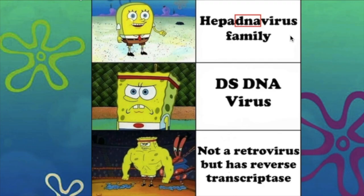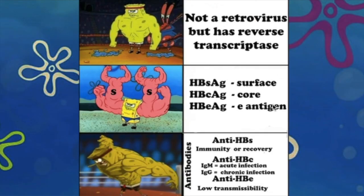Hepatitis B Virus is a member of the Hepadnavirus family. It is a partially double-stranded DNA virus — not a retrovirus, but has its own reverse transcriptase. Hepatitis B Virus has these antigens: HBsAg, the antigen found on the surface of the Hep B virus; HBcAg, the antigen associated with the core of HBV; and HBeAg, secreted by infected hepatocytes into circulation.